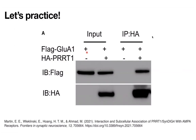Now think about GluA1. We can see that in both samples we have GluA1, but are we going to see it in our pulldown? We're pulling down the HA, so the only way we'll see GluA1 is if it's actually interacting with our HA protein. They're immunoblotting against the flag tag to detect GluA1. We can see the HA — good, because that's what we're pulling out — and we also see GluA1. So this is telling us that these two proteins were interacting.